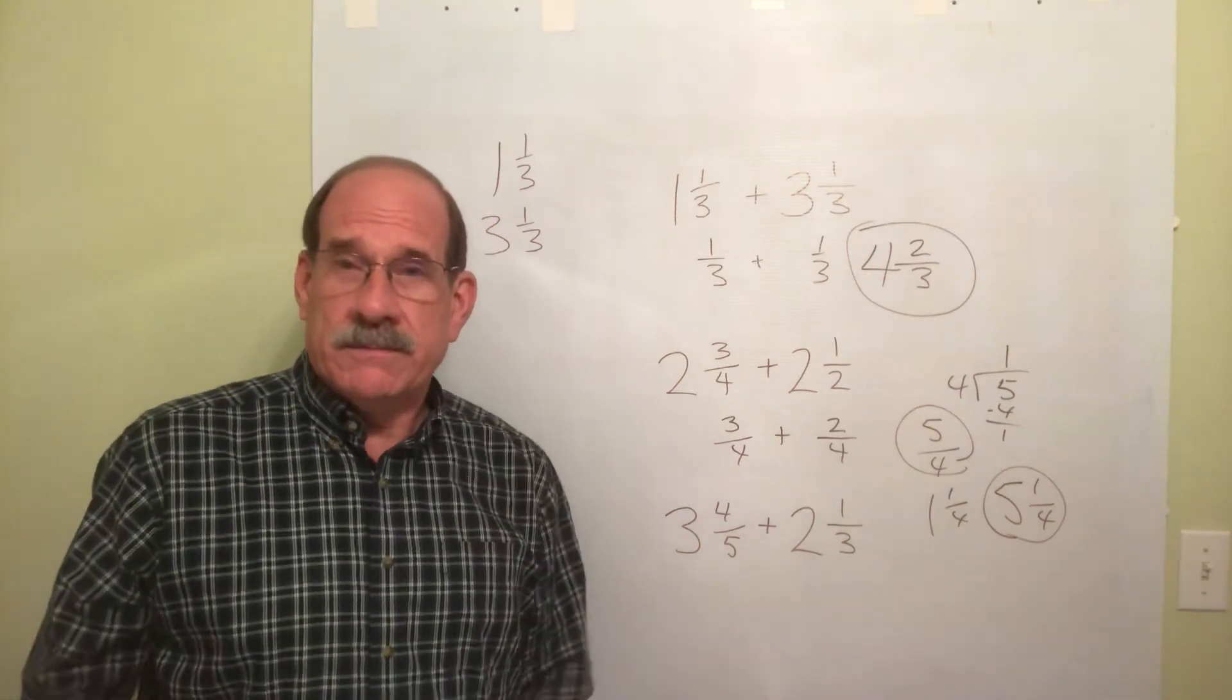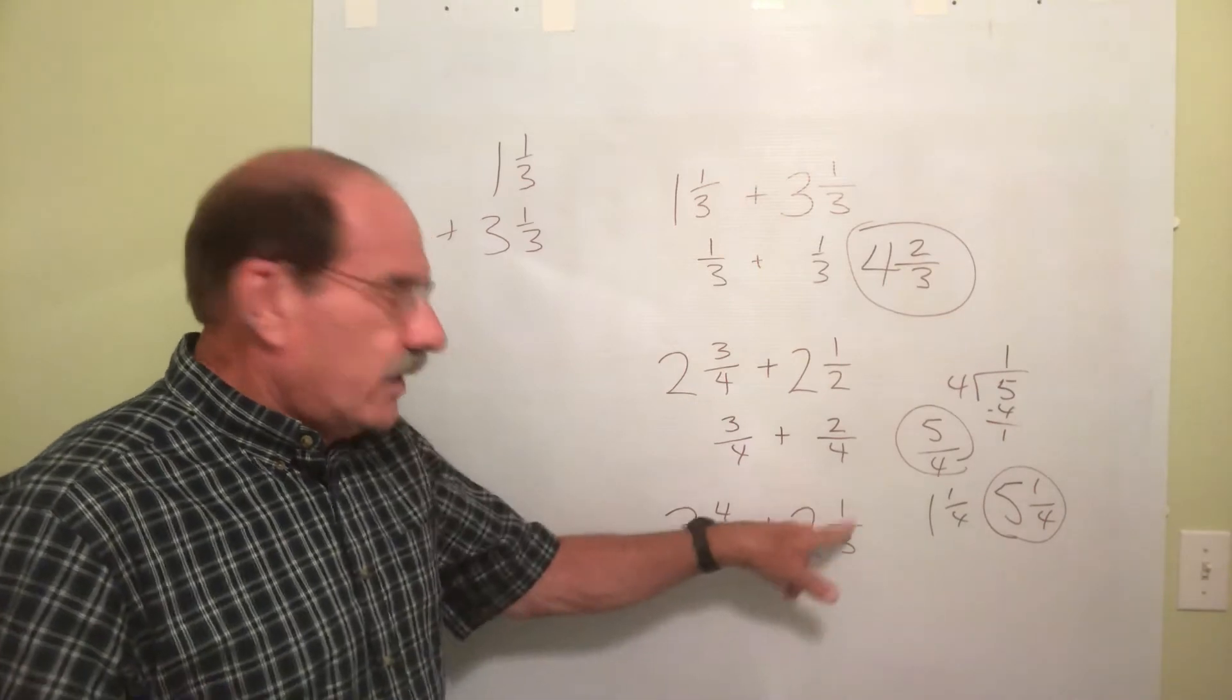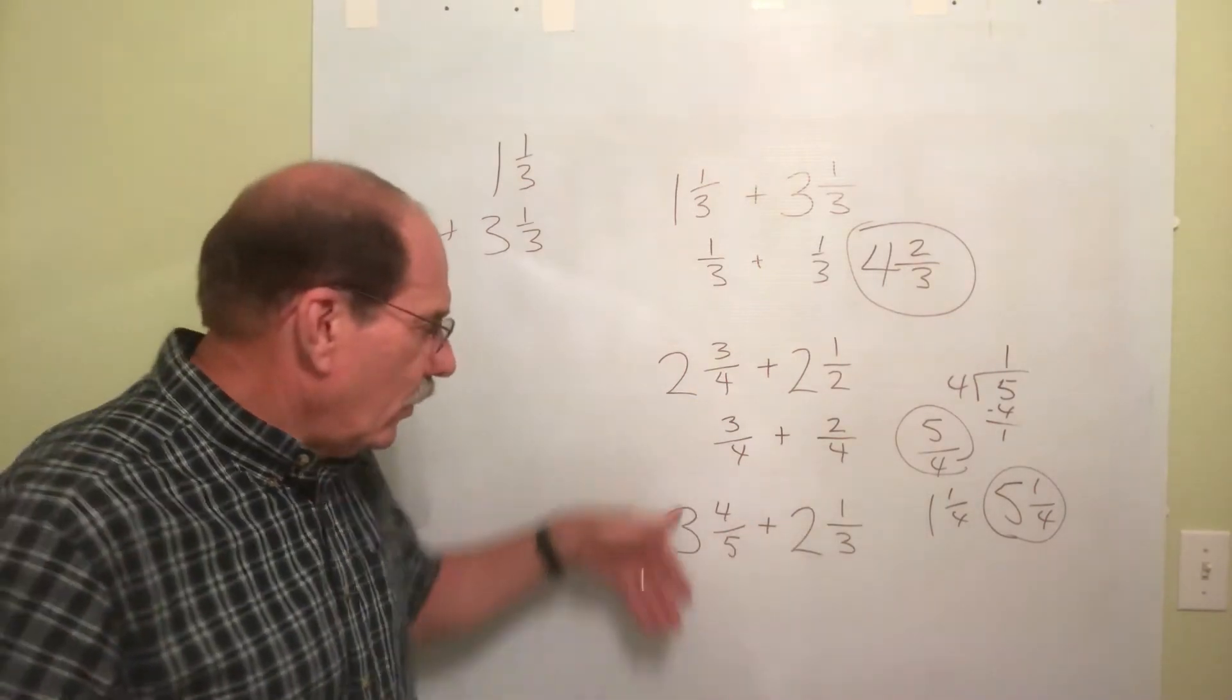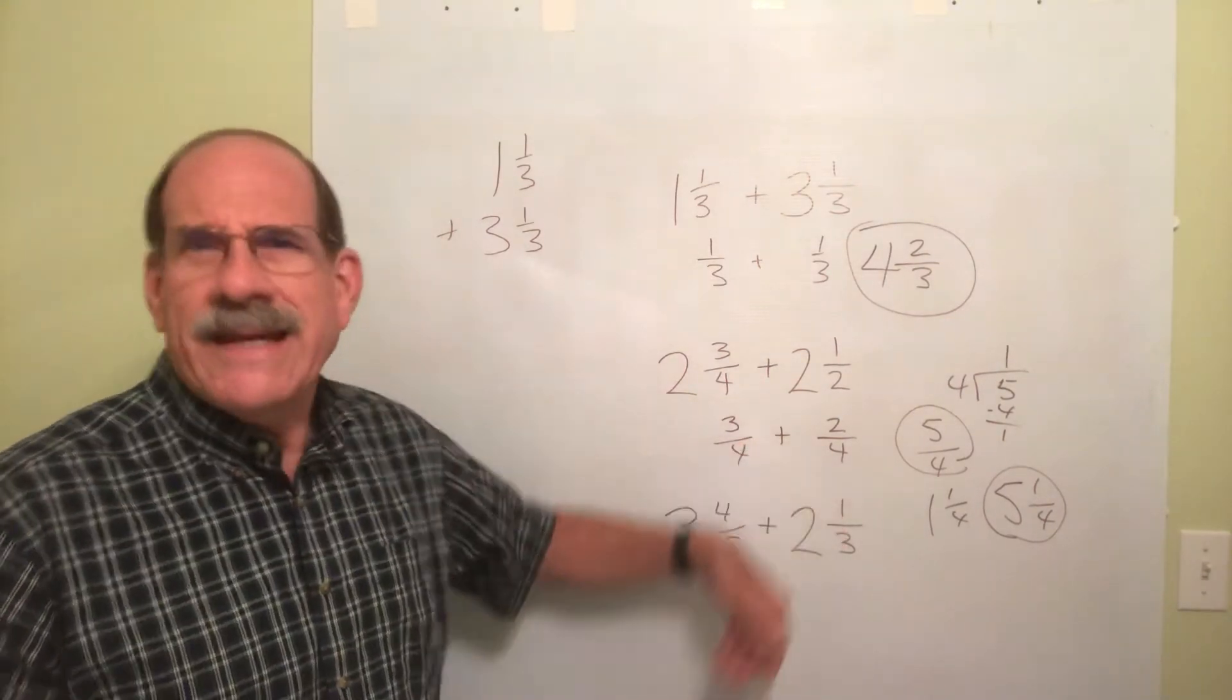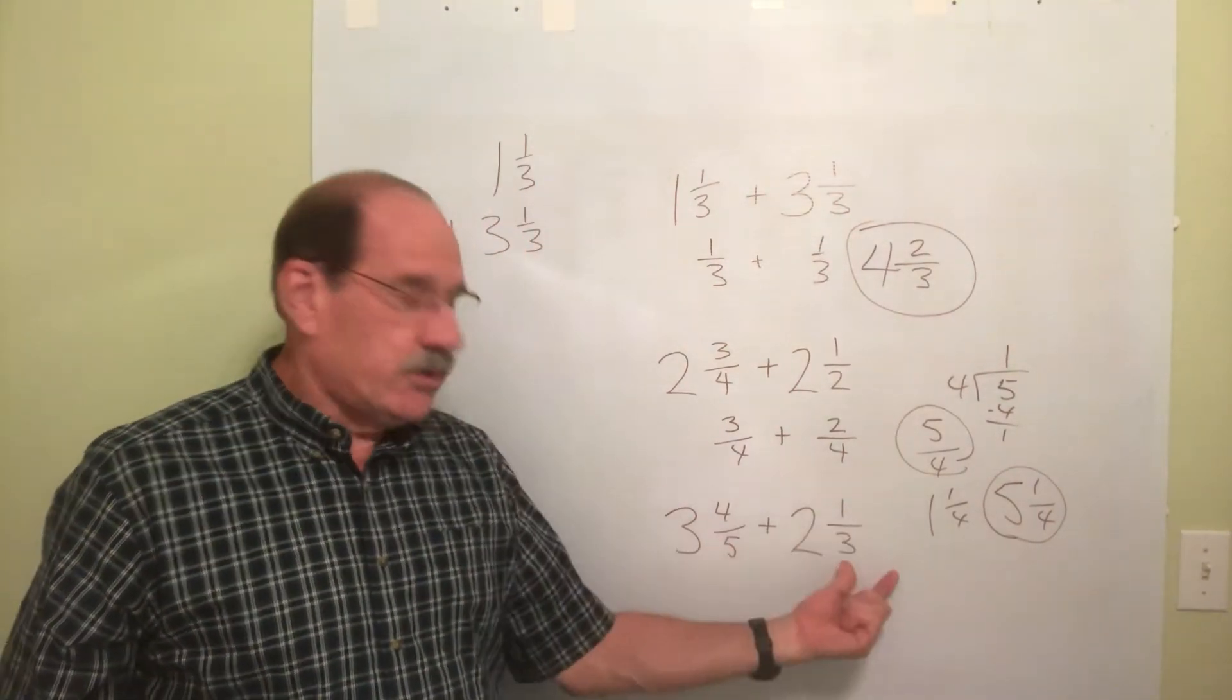Well, let's do another one. 3 and 4 fifths plus 2 and 1 third. Once again, ignore the 3, ignore the 2. They don't exist temporarily. Let's just do 4 fifths plus 1 third.